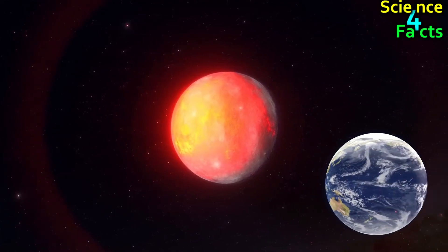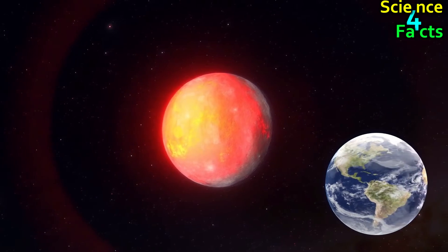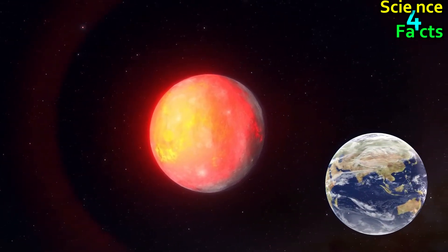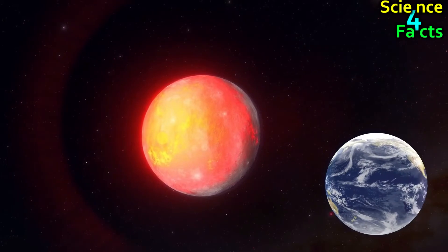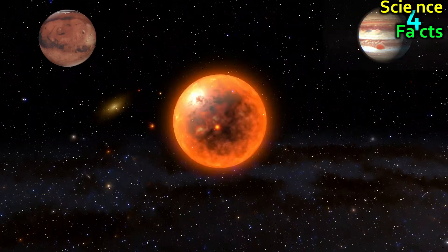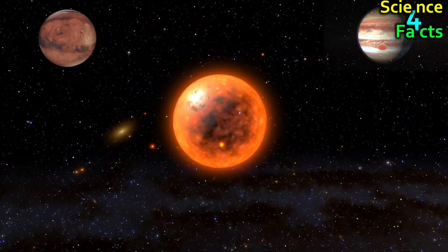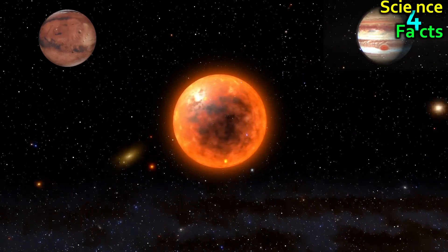Moreover, Venus' proximity to Earth means that it is at its brightest during its crescent phase and only slightly fainter when it is at its farthest during its full phase. Neither Jupiter nor Mars could compete with Venus even when the planet is at its faintest.